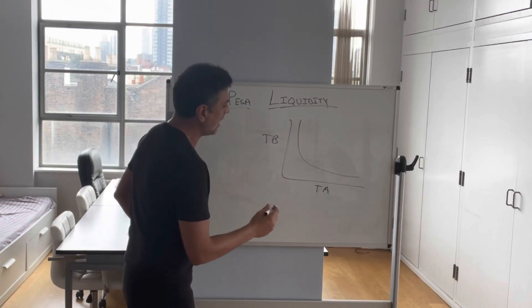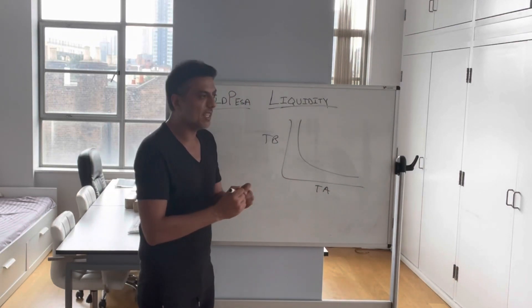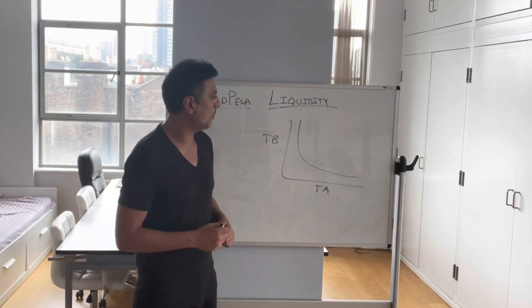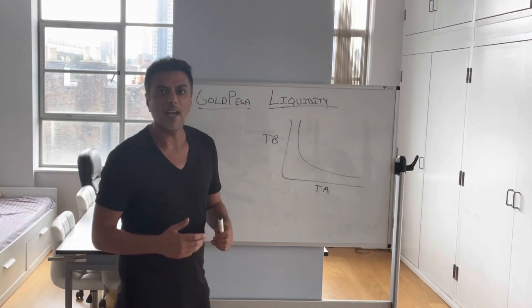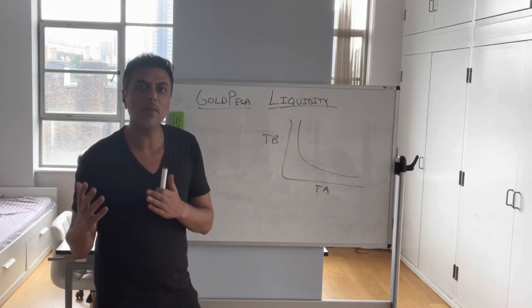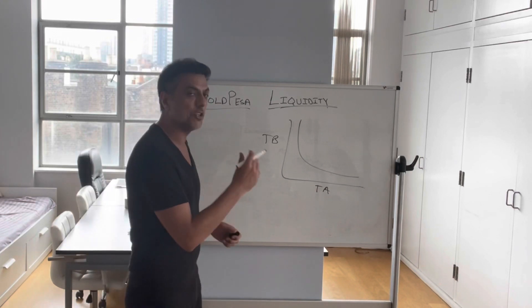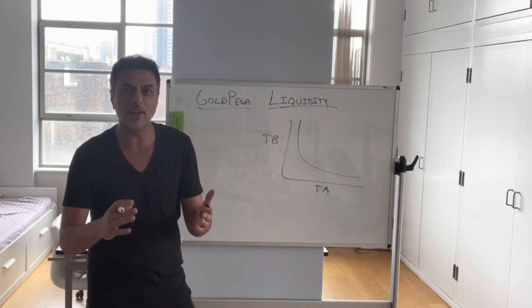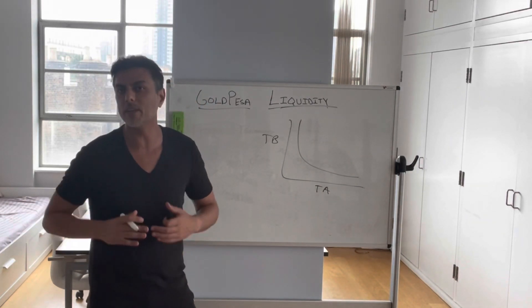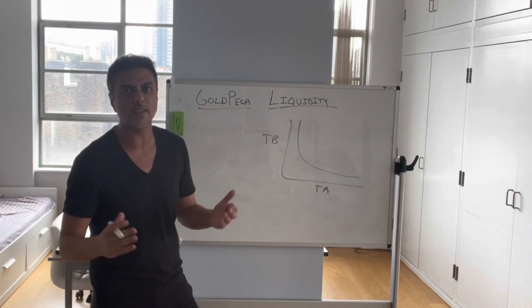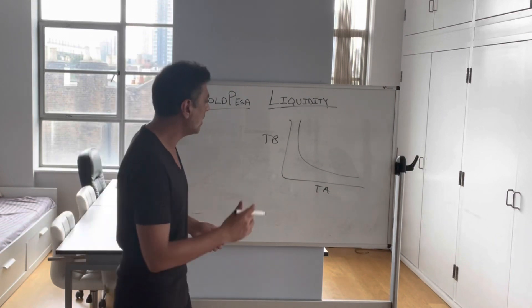When you're placing liquidity, for example, let's say we placed a million dollars and 10 million GPOs in the initial liquidity pool and hit the start button on Uniswap and said everybody go nuts, buy and sell as you wish.